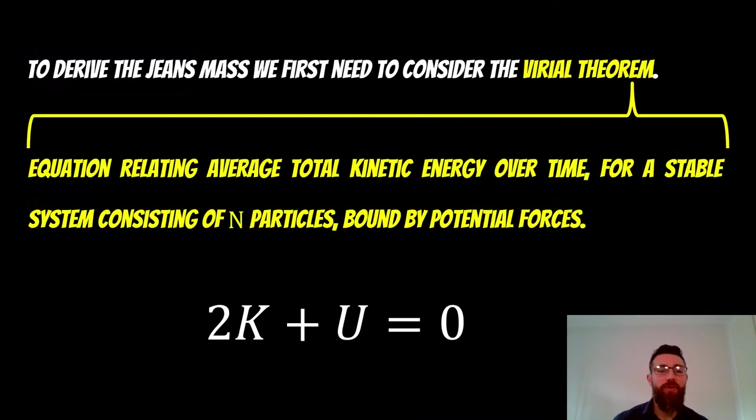So it all starts with the Virial Theorem. And this is an equation that relates to the average total kinetic energy over time for a stable system consisting of N particles bound by potential forces. That's basically the gravitational forces balancing the kinetic energy of the gas.